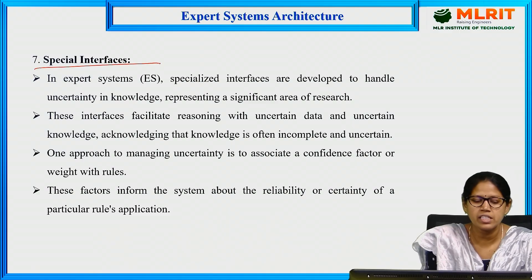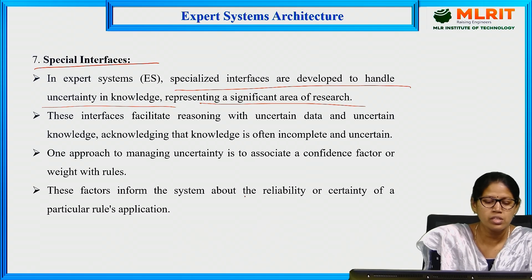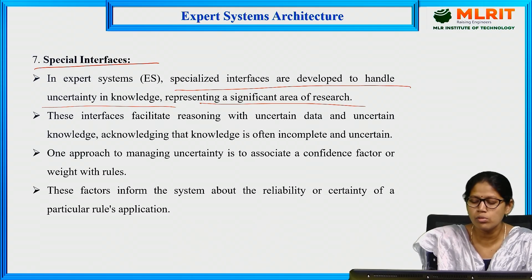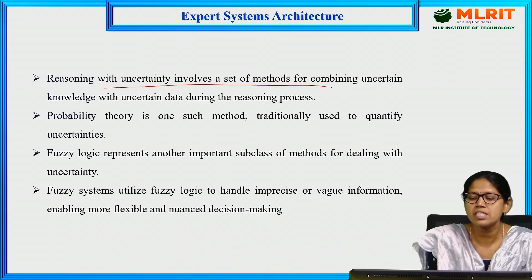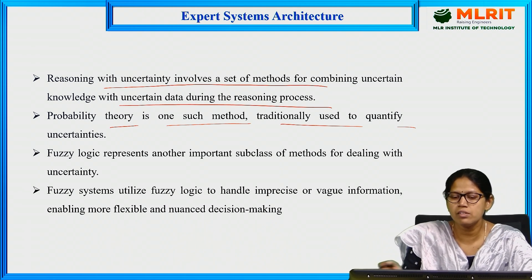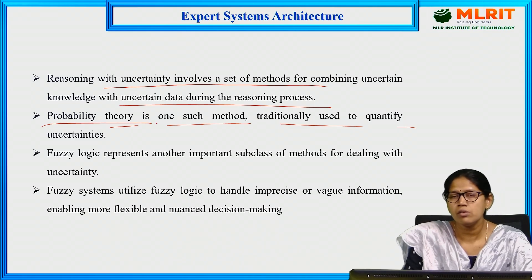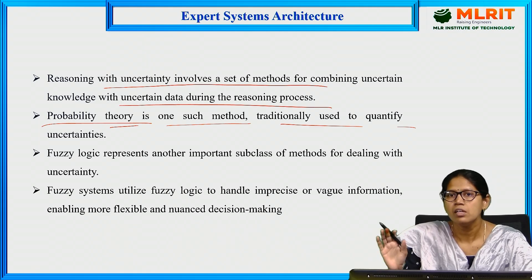The specialized interfaces are developed to handle uncertainty in knowledge, representing a significant area of research. A human cannot give 100 percent guarantee that a statement will be true, and expert systems also have this uncertainty. To manage it, a competence factor or weight is added with rules. Reasoning with uncertainty involves combining uncertain knowledge with uncertain data during the reasoning process. Probability theory is one such method traditionally used to quantify uncertainty — for example, we can say there is a 97 percent probability of rain today, so a certainty factor or weight is added to indicate that a statement is 97 percent true.